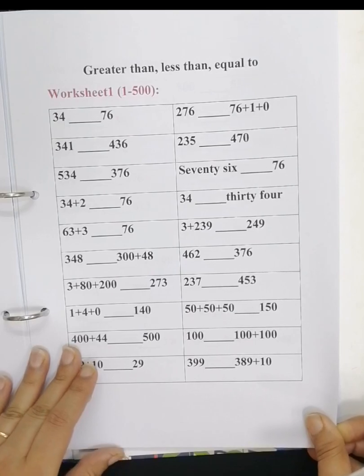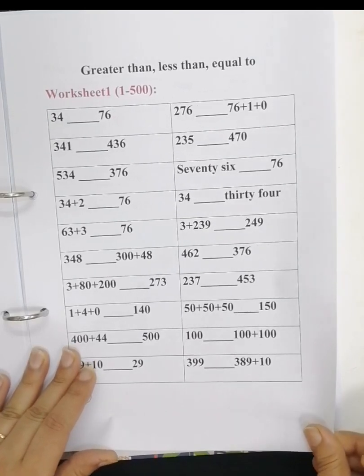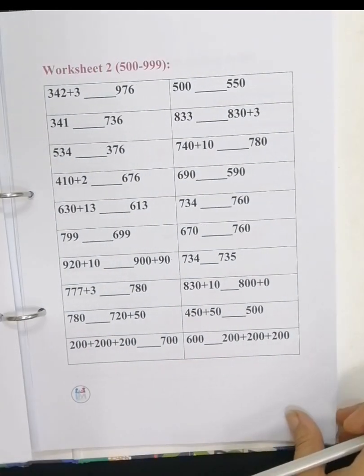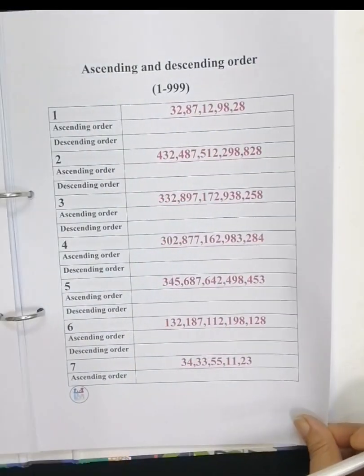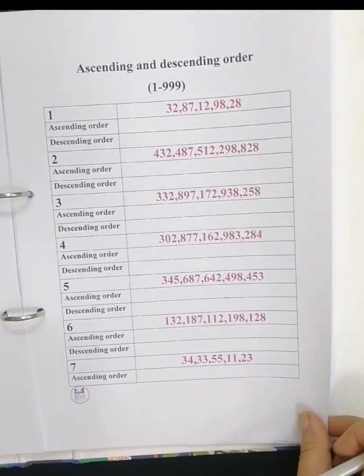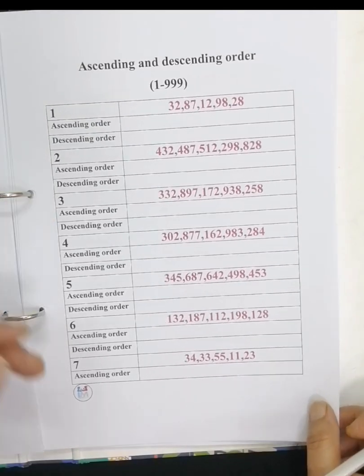Here greater than, less than, or equal to. Ascending order and descending order.